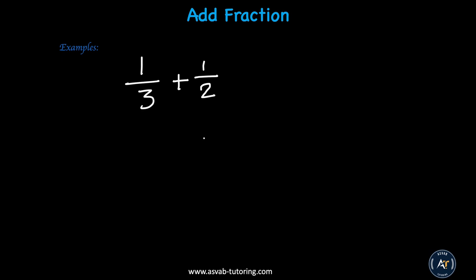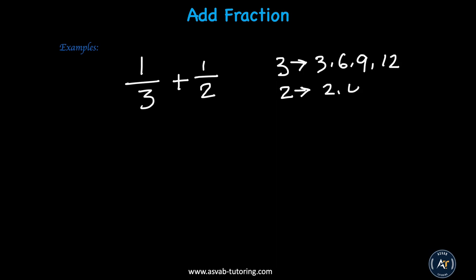In order to add these two fractions, the first thing you need to do is find the common denominator. So how can you find the common denominator? Here's a trick: read the multiplication table. So the 3 multiplication table and the 2 multiplication table: 3, 6, 9, 12 — and 2, 4, 6, 8. Now you can see the smallest common number between these two lines is 6, so 6 is the smallest common.